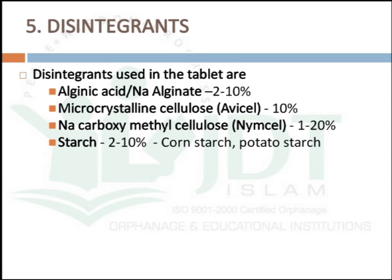Disintegrants used in tablets include: alginic acid or sodium alginate at 2 to 10%; microcrystalline cellulose (Avicel) at 10%; sodium carboxymethyl cellulose at 1 to 20%; and starch at 2 to 10% (corn starch or potato starch). Starch is versatile — starch paste acts as a binding or granulating agent, starch powder added with the active pharmaceutical ingredient acts as a diluent, and starch added after granulation and before compression acts as a disintegrating agent.